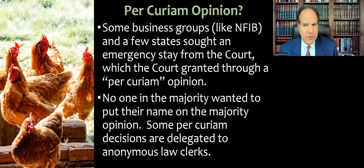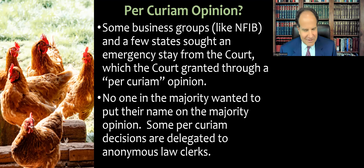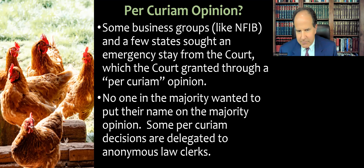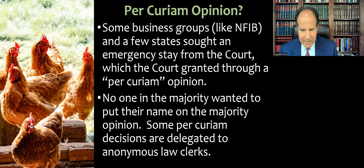Some business groups like the NFIB and a few states sought an emergency stay. So we have an emergency rule, and then the parties asking for an emergency stay from the court, which the court granted. They granted the stay through a per curiam opinion, which means it's an anonymous majority opinion — no one in the majority wanted to put their name on it, maybe because it was obvious that thousands of people were going to die as a result of this case.